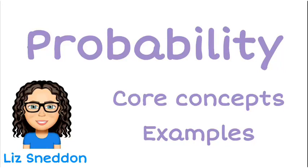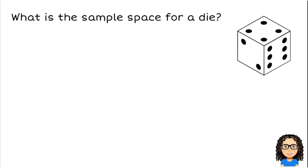Hi, this is Liz Nedden. We're going to look at probability and we're going to look at some examples of core concepts. So let's have a look at this. What is the sample space for a die? The key thing there is it's looking for sample space.